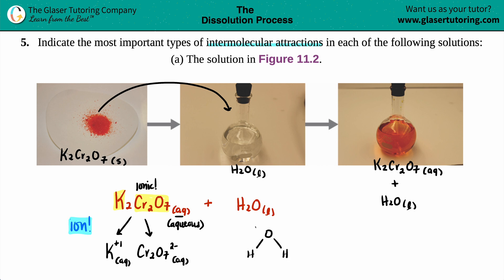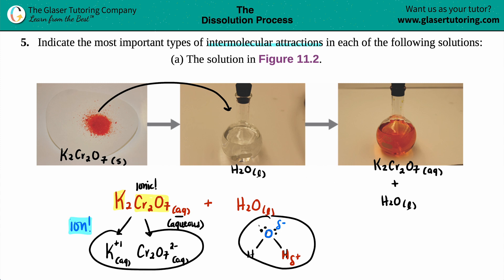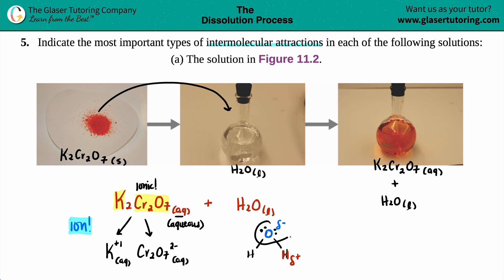When we look at H₂O, we have to talk about it in terms of charges because that's what's making the attraction. Potassium has a +1 charge and dichromate has a 2− charge. In the Lewis structure of H₂O, oxygen is the more electronegative atom so it has a partial negative (δ−), and the hydrogens are partial positives (δ+) because they are less electronegative. Since opposites attract, the partial negative oxygen is attracted to the positive potassium ion, and the partial positive hydrogens are attracted to the negative dichromate ion.